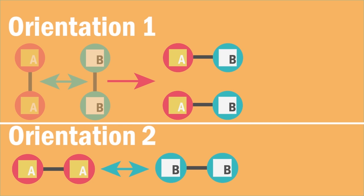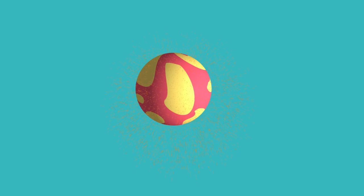Here in orientation one, the two diatomic molecules A2 and B2 are in the correct orientation to react. In orientation two, they are not, and so no reaction occurs.